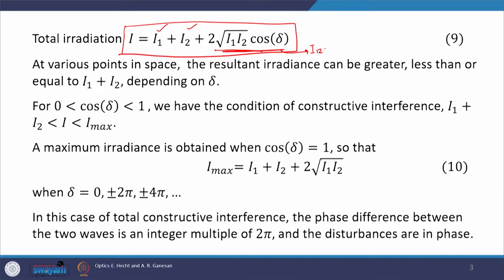With those assumptions, we calculated the total disturbance at P due to sources S1 and S2, and from that disturbance we calculated irradiance, which is the time average of the square of the total electric field at P. At various points in space the resultant irradiance can be greater than, less than, or equal to I₁ + I₂, depending on the phase δ.